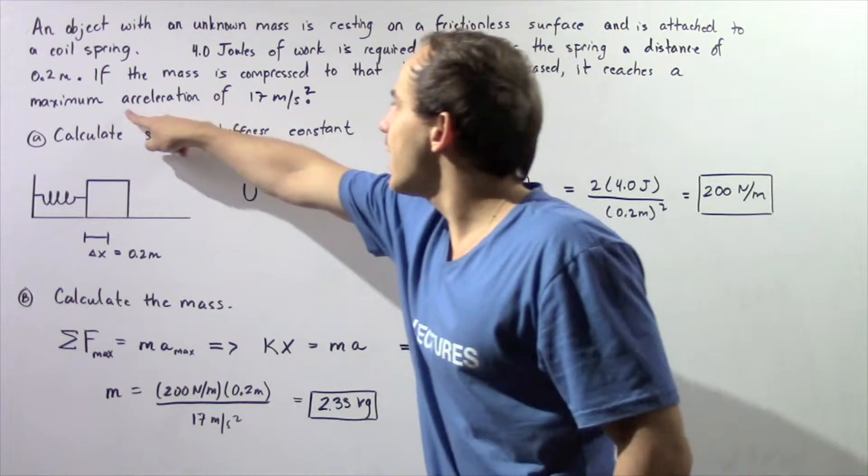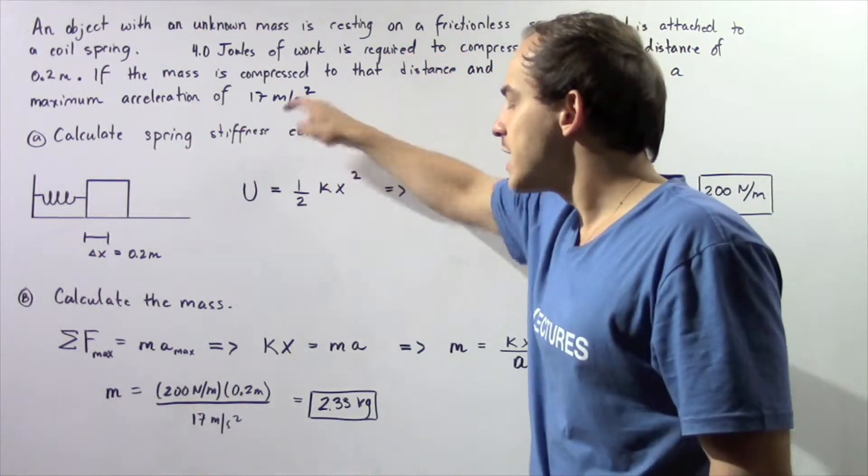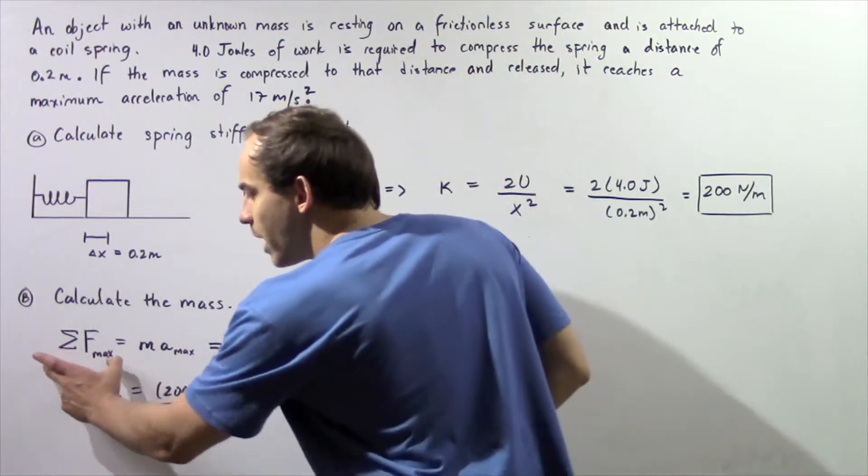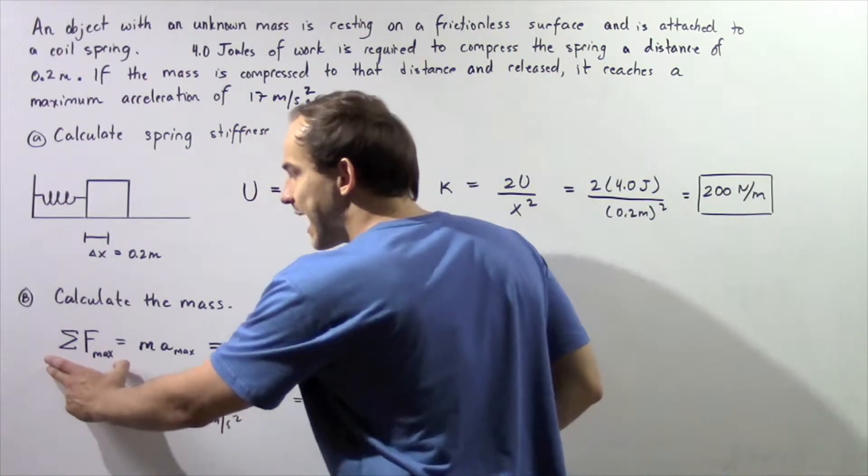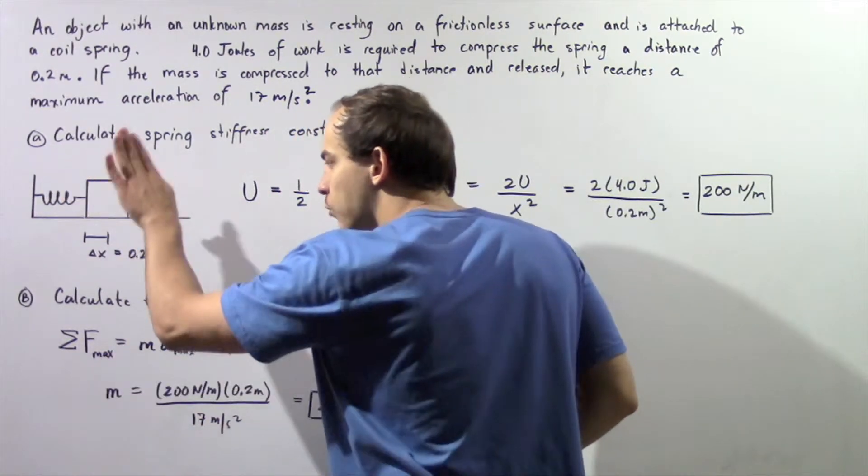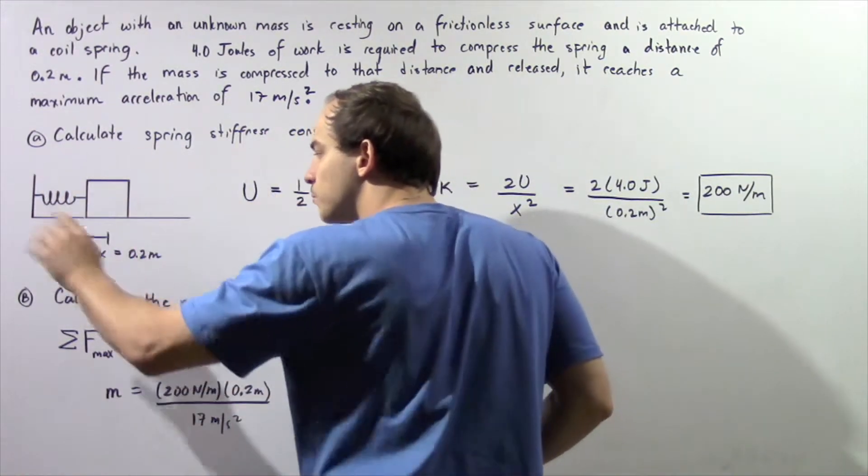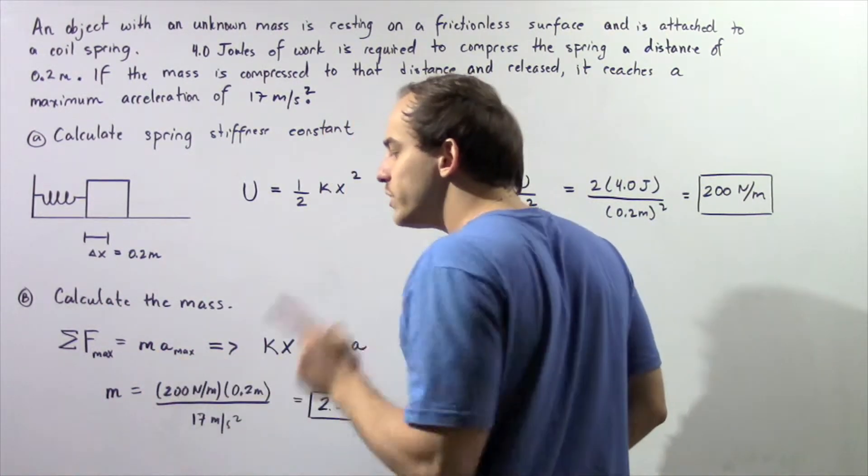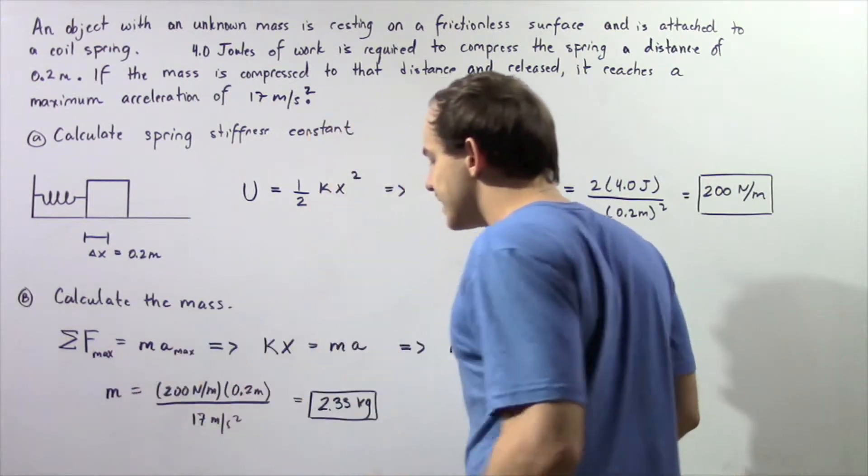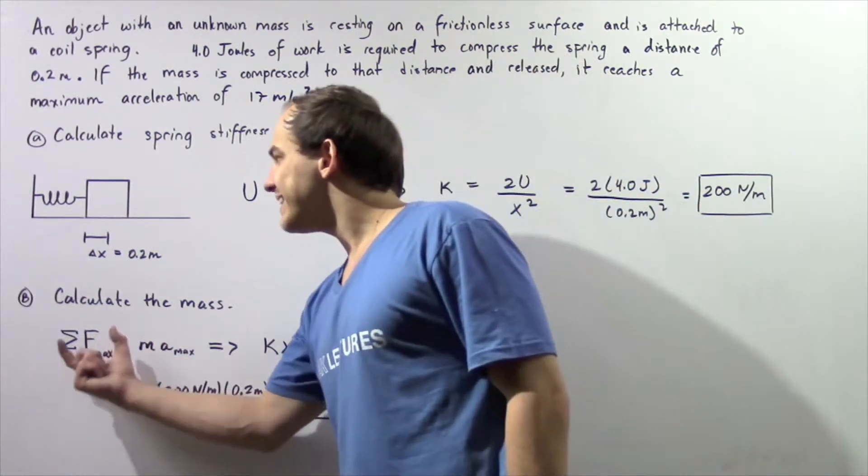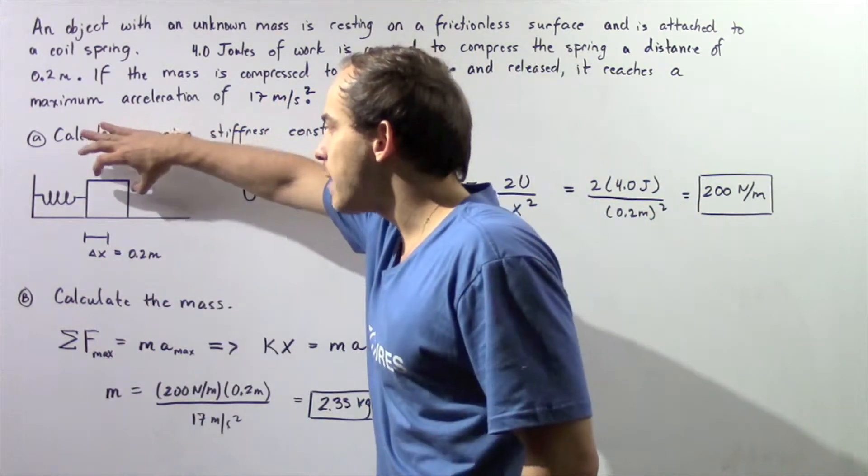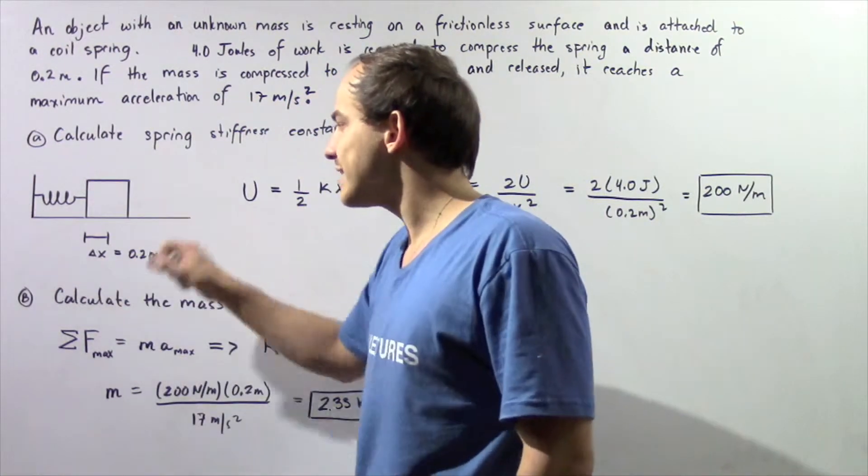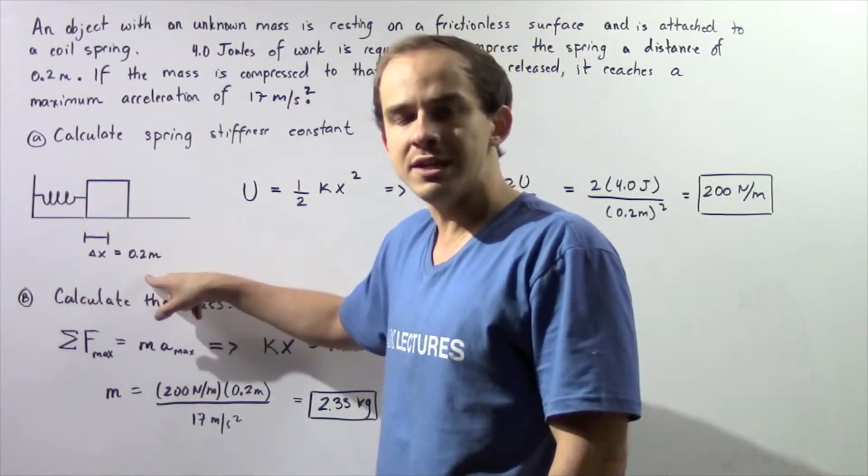which is given by this acceleration. If we find the maximum force acting on the object at that point when our object is compressed 0.2 meters, and since we know the maximum acceleration, we can calculate what the mass is. What exactly is the force acting on our mass when we compress the spring a distance of 0.2 meters?